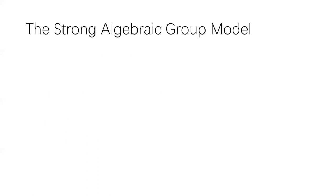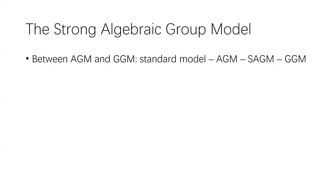To analyze the RSW assumption, in this paper we introduce a quantified version of the AGM called the strong AGM. The strong AGM lies between the AGM and the general group model. So there is a spectrum of models: at one end is the standard model, at the other end is the general group model, with the AGM in between, and the strong AGM lying between the AGM and the general group model.